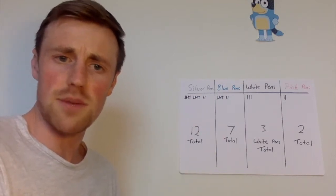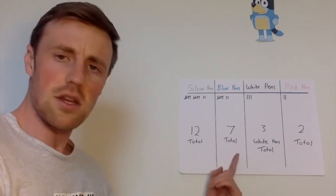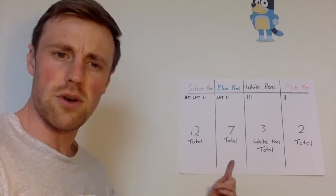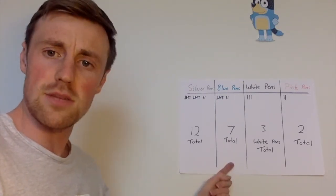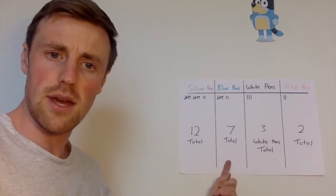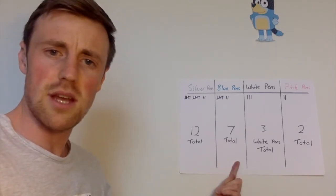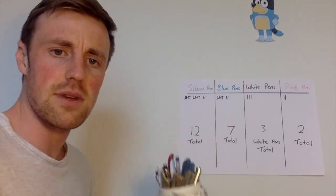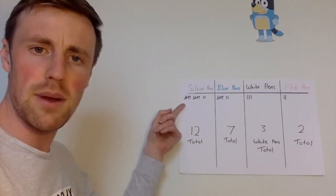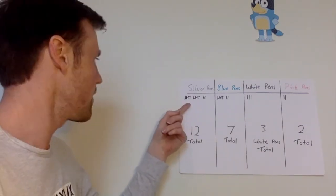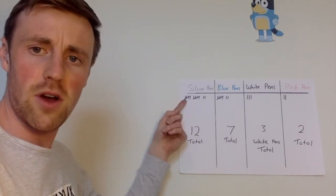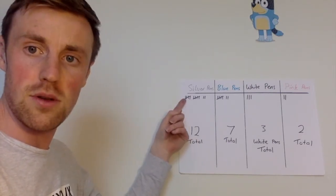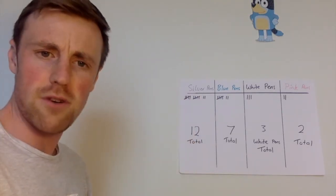Once you've found your collections of something, you need to make a tally in your book. Now I've already drawn mine up, because I know you guys have done this before in the past week. Remember, these are fives — after the four strikes, you need to put a line through the middle to make five.